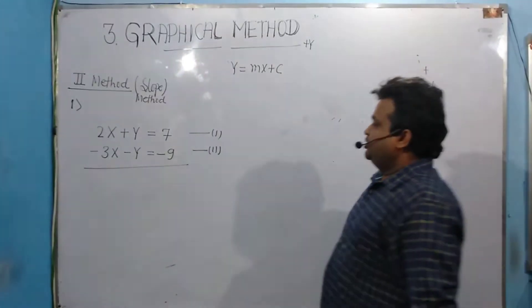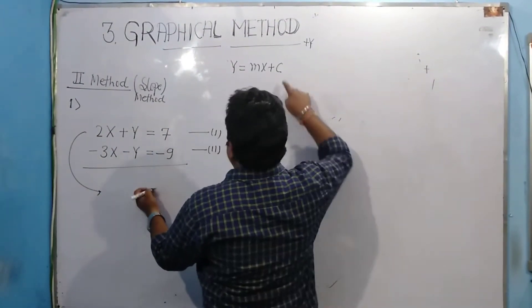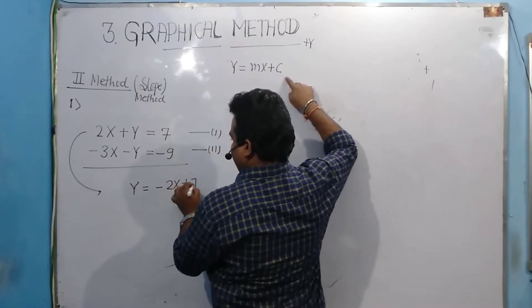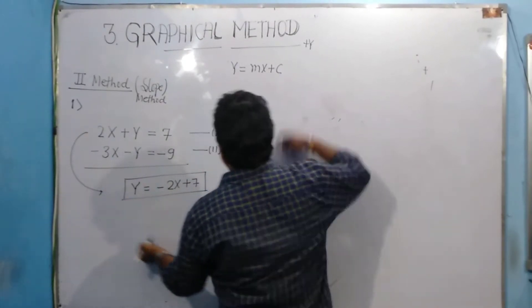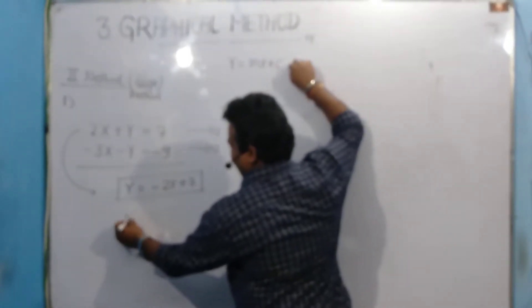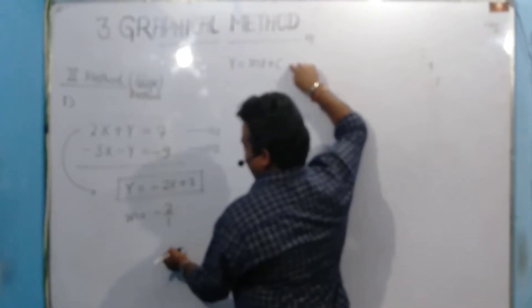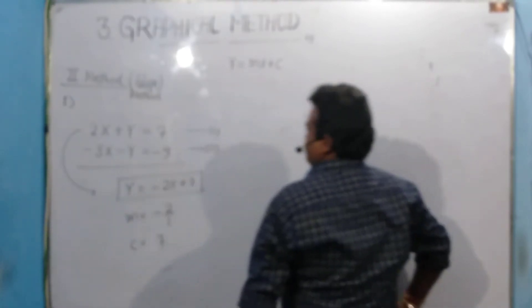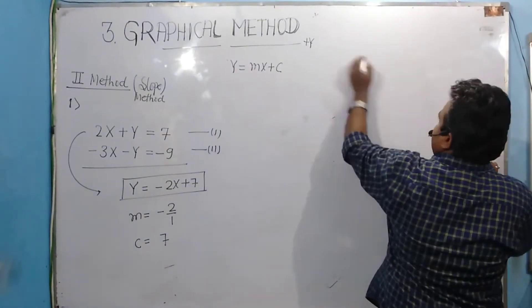I am taking equation number one and converting it into this form. So I get y = -2x + 7. This is in y = mx + c form. Comparing with this equation, I find the value of m: m = -2/1, and my c value is 7.